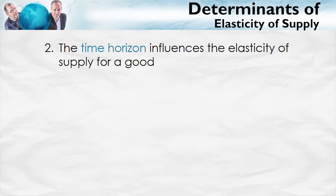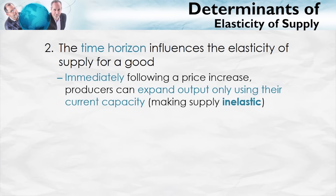The time horizon influences the elasticity of supply, and this is really just a logical consequence of the fact that elasticity depends upon costs and how easy it is to expand production. Immediately following a price increase, producers can expand output only by using their current capacity, which tends to make supply more inelastic. For example, if the price of grain goes up, farmers can get a little bit more grain out of their fields by threshing more carefully, but they're not going to get a lot more until a year or two down the line after they've had a chance to plant more acres.